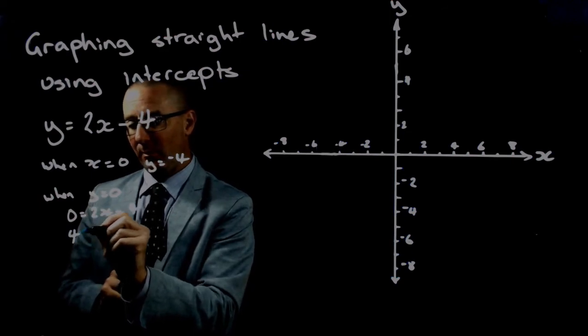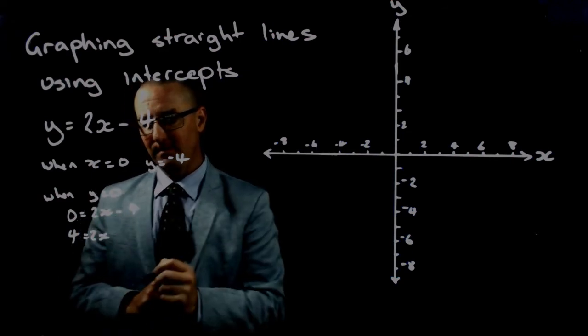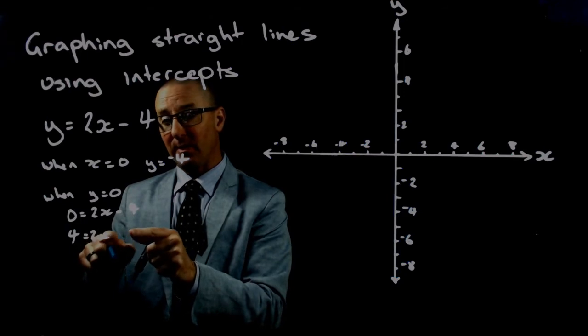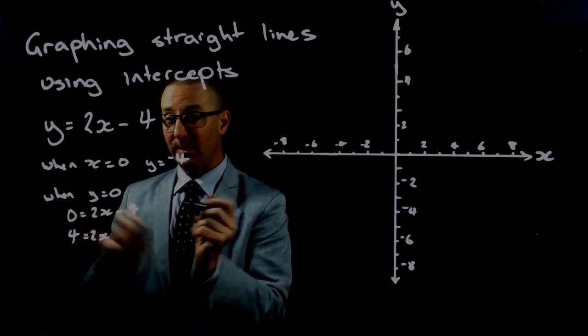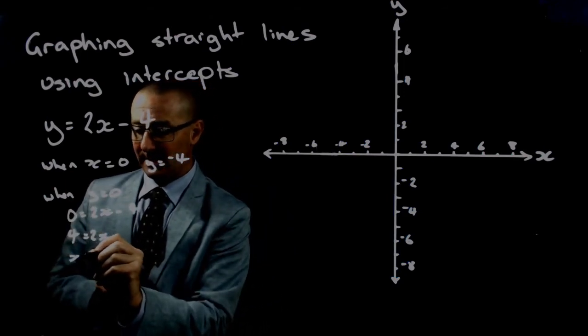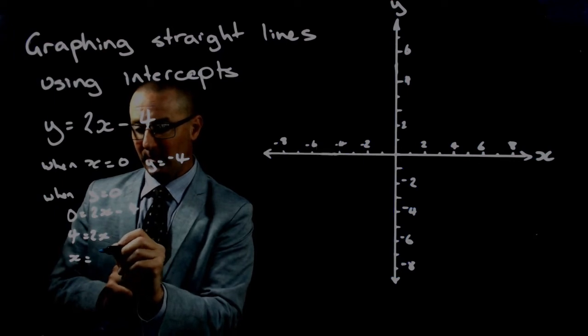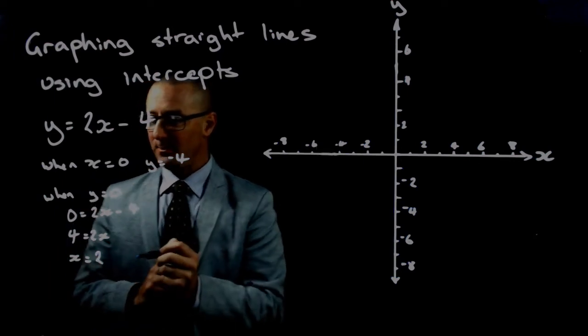So 4 equals 2x, and then we can divide both sides by 2 to find the value of x. So x equals 4 divided by 2, which is 2.